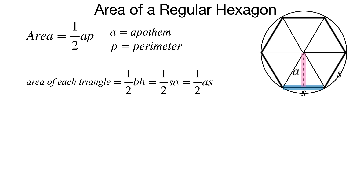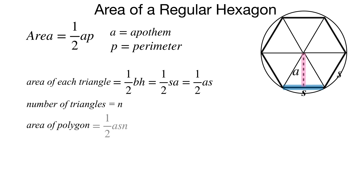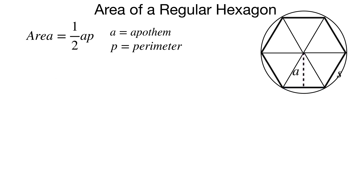If I can find the area of each of those triangles — the area of a triangle is one half base times height — for this polygon inscribed in this circle, it's one half times S, the length of the side, times A the apothem, or one half A times S. That's one triangle. There are N triangles total, so multiplying by N gives one half A times S times N. Since S times N equals perimeter, one half AP is the area of the entire polygon. That's where this formula comes from, and it works for any regular polygon.